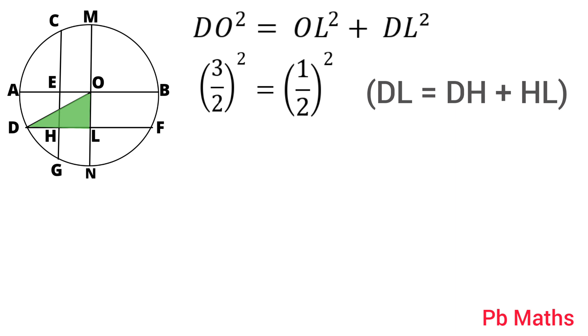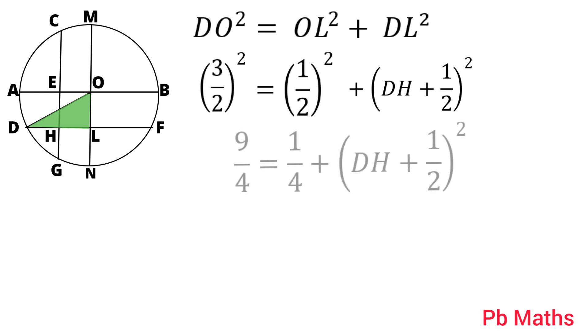So, DL² equals (DH + 1/2)². Now, by solving this, we have (3/2)², which is 9/4, equals 1/4 plus (DH + 1/2)².